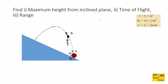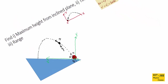We need to set a frame of reference. When a particle is thrown on the ground, we take the initial point as the origin, the x-axis along the ground, and the y-axis perpendicular to the ground. The same way here, since the particle is projected on an inclined plane, we take the initial point as the origin, x-axis along the incline, and y-axis perpendicular to the incline. For convenience, you can rotate the page to better understand the x and y components.